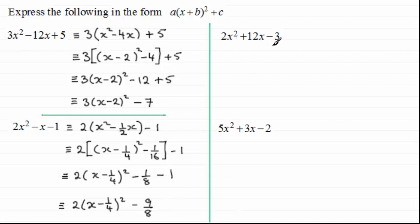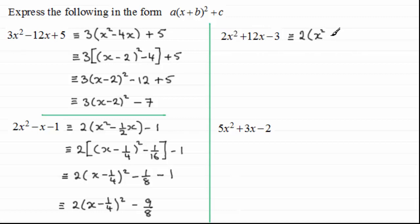We've got two more examples here. This one's fairly straightforward; this one involves a lot more fractions. I'll give you a moment — pause the video and I'd strongly encourage you to have a go. Welcome back. So with this one all we do is pull out 2 at the front of a bracket across these two terms. These are nice terms because they're divisible by 2, so this is going to be a relatively easy example to do.